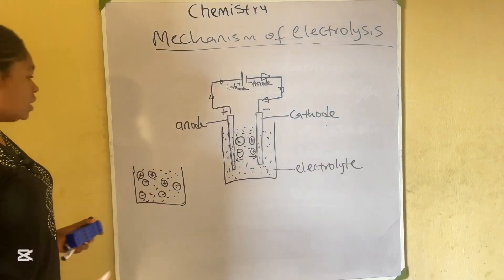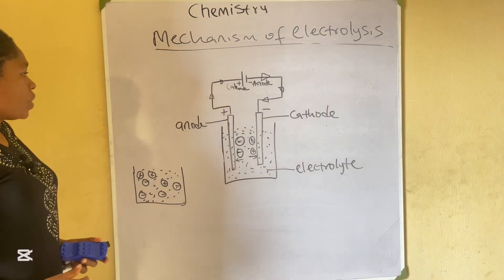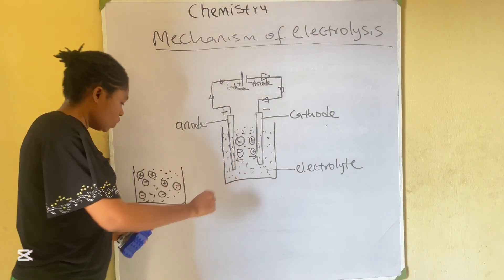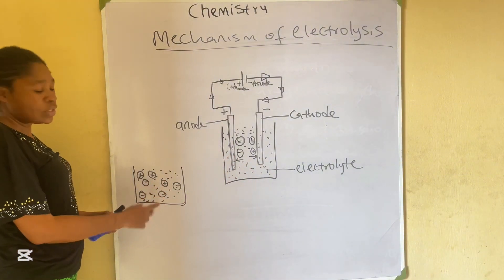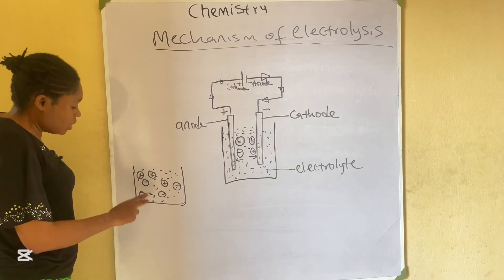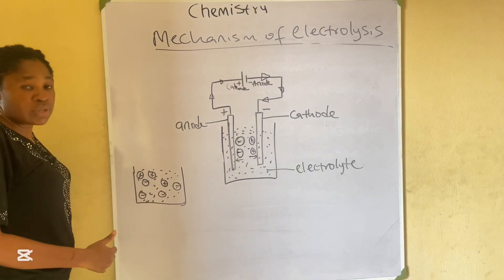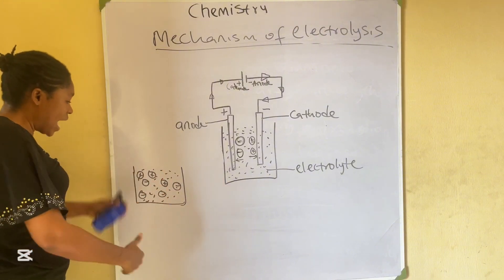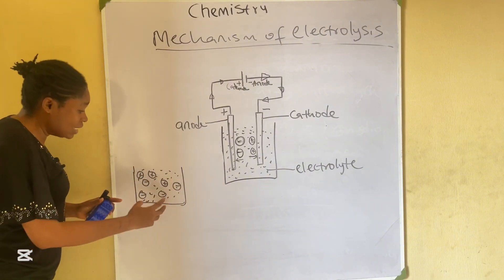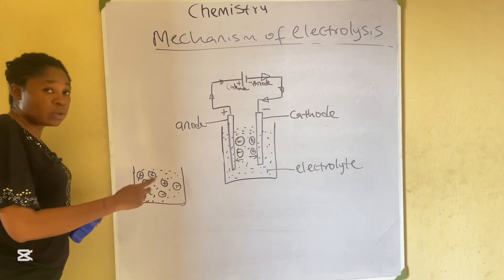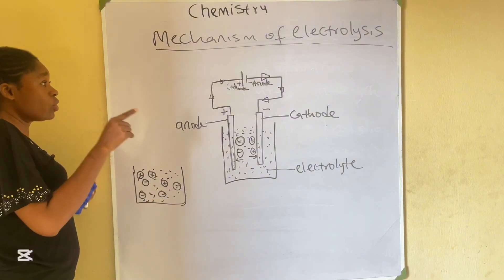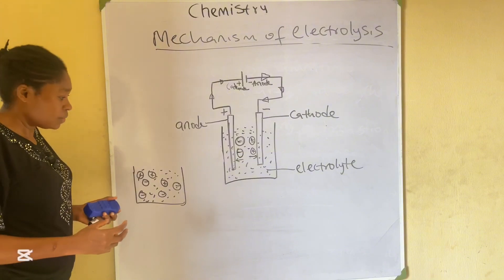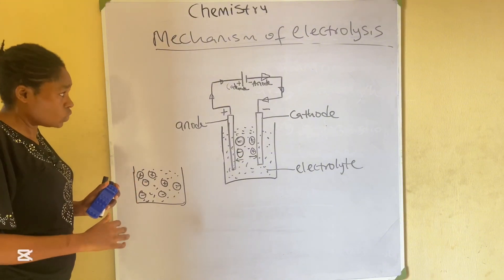The mechanism of electrolysis. You can see this is an electrolytic cell — just a vessel with an electrolyte. Before the passage of electricity, the ions move freely. There is a random movement of ions. The positively charged ion and the negatively charged ion, they move randomly. It means that before any current passes, those ions are already dissociated into free-moving particles.